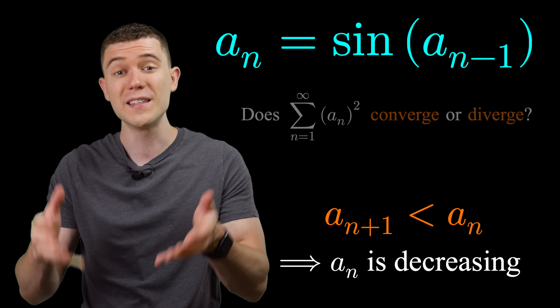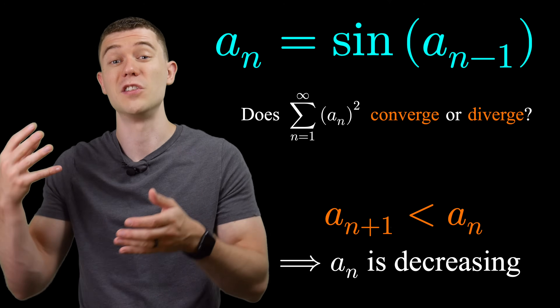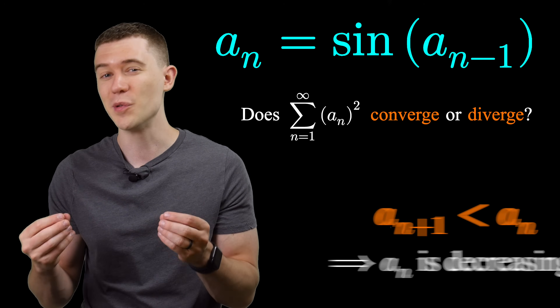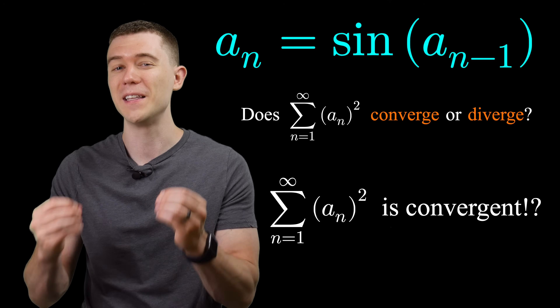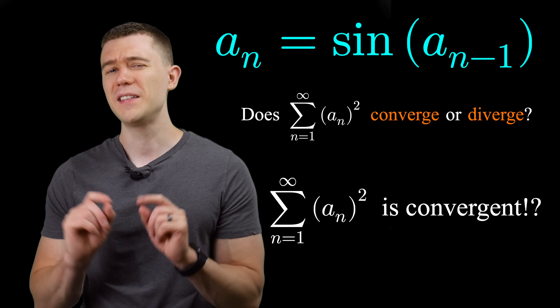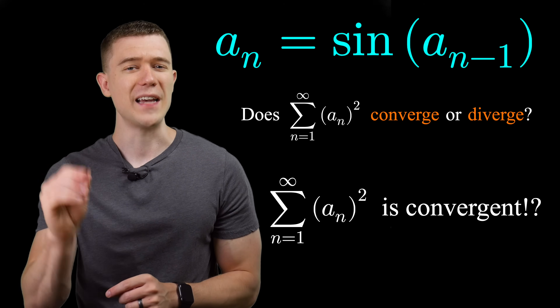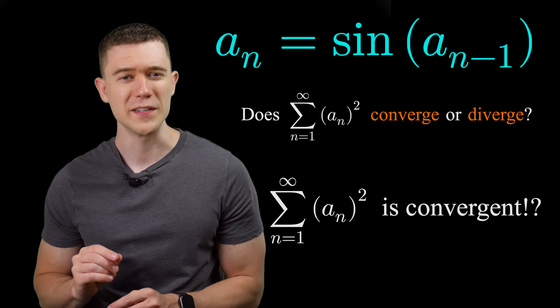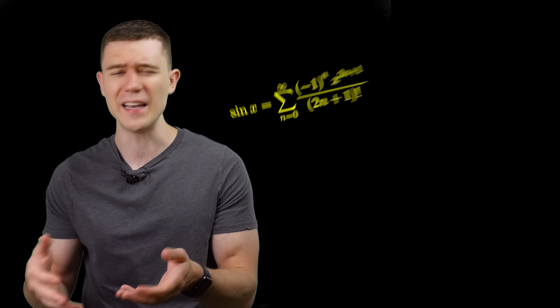We're looking at the sum of a sub n squared, so it really feels like this should be convergent. But not so fast — let's look at the Taylor series representation for sine x.